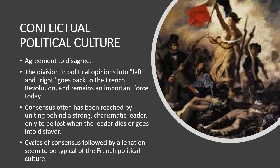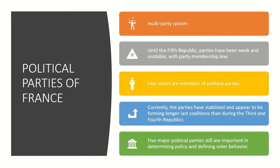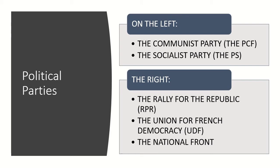This conflictual political culture will come into play when we discuss our seminar question. In society and politics, there are divisions in France: between the middle class and the working class, between the rural and urban, between religious and non-religious, and between native French and immigrants. France has a multi-party system; until the Fifth Republic, parties were weak and unstable with relatively low membership. Currently, parties have stabilized and appear to be forming longer-lasting coalitions than in the Third and Fourth Republics. Five major political parties remain important in determining policy and defining voting behavior.